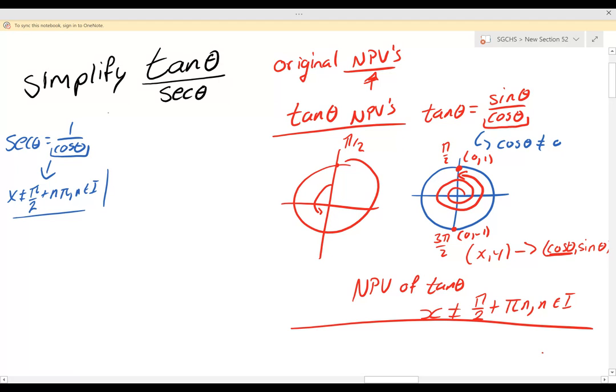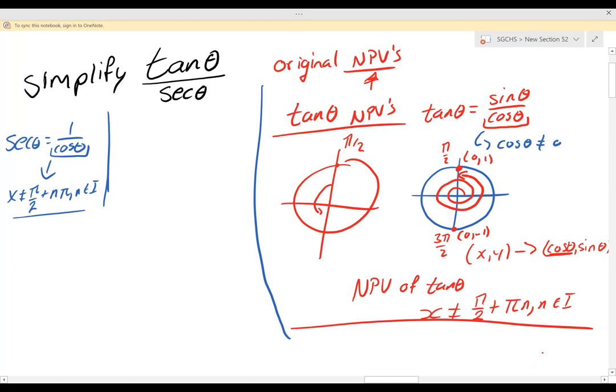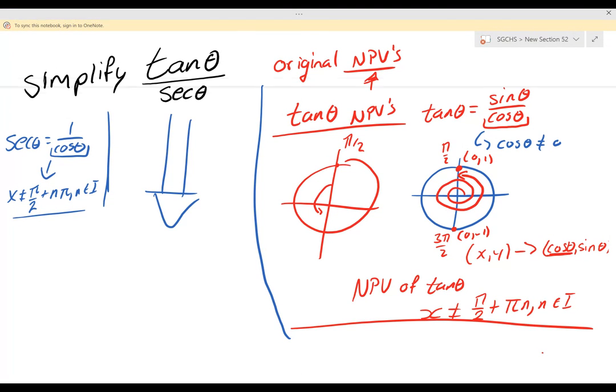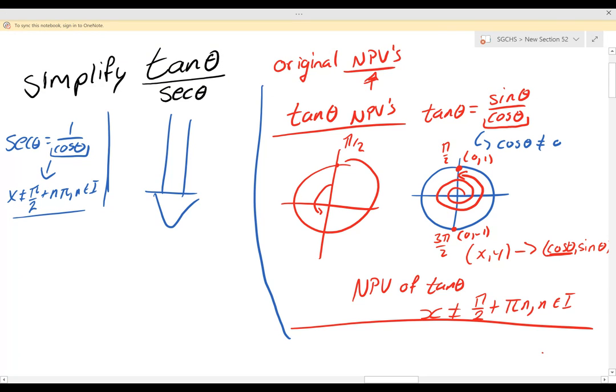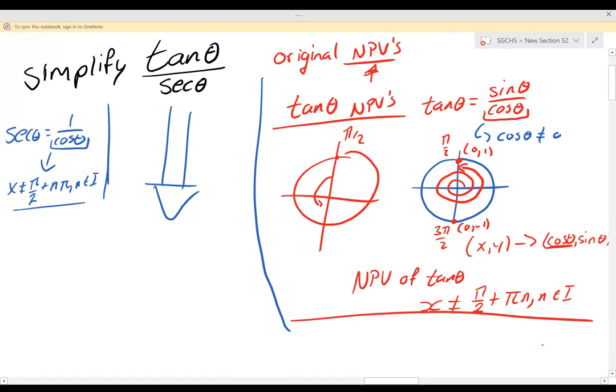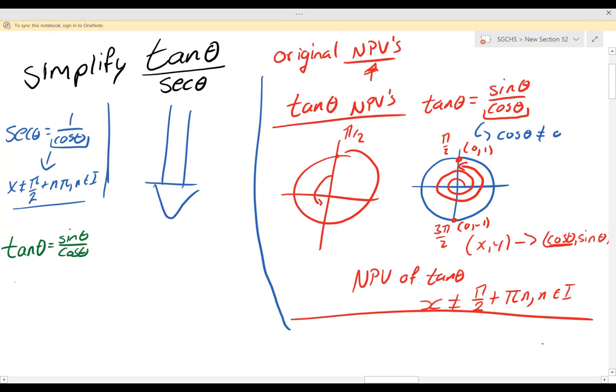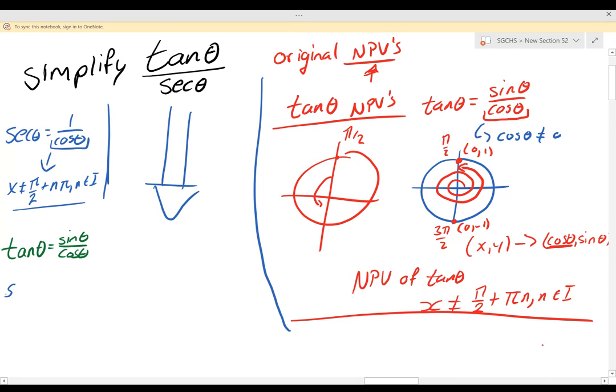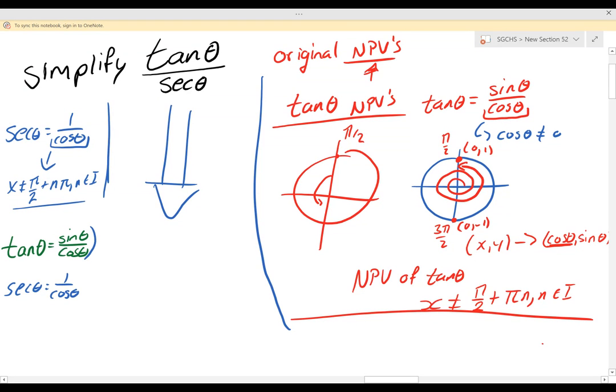So now that we have found our non-permissible values, we can simplify this. So let's do so using our quotient rules and our reciprocal functions. So tan θ I'm going to put in terms of sine and cosine. Sec θ I'm going to put in terms of cosine. So this is a quotient identity. This is a reciprocal identity.